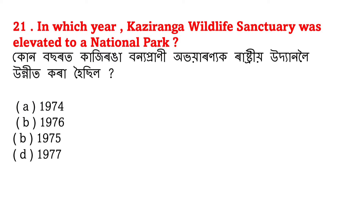In which year was Kaziranga Wildlife Sanctuary elevated to a National Park? Ketya kajironga rastiyo avarai no rastiyo uddhano le unnitokara hoish? This question is very very important. The answer is A - 1974. Kaziranga sanctuary was established in 1915 and was elevated to a national park in 1974.